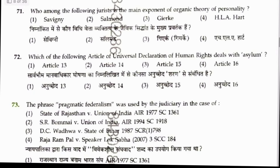Question 71: Which jurist is the main exponent of the organic theory of personality? This was propounded by Friedrich Ratzel. Answer is 3.